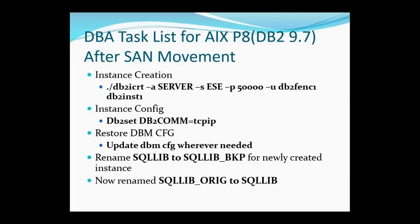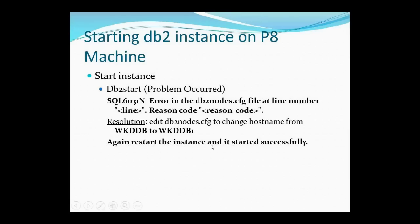When we started the DB2 instance on the newly configured P8 machine, we got an error. The error was in the DB2 nodes.cfg file at a specific line number. When I searched for this DB2 error code, I found that we also needed to change the hostname entry in the DB2 node start configuration, because we used the sqllib taken from the old P6 machine. The hostname there was WKDDB, but we had changed the hostname of the P8 machine to WKDDB1. I changed that entry from WKDDB to WKDDB1, and when I started the DB2 instance, it started successfully.